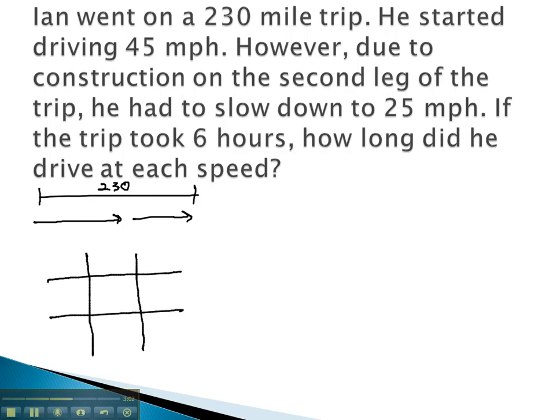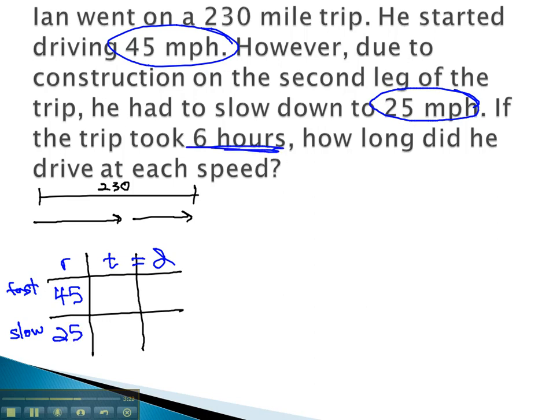Let's organize what we have in a table. Rate times time equals distance, and when he was going fast, he was driving 45 miles per hour, when he had to slow down to 25 miles per hour. His total trip took 6 hours. Again, we use t for the first time, and total minus t, or 6 minus t for the second time.